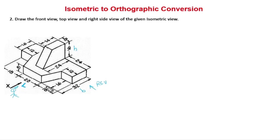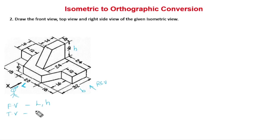In the front view we can see length and height. For the top view, we are looking from the top — lines that are parallel and height-related lines are vertical lines. In the top view, vertical lines become a point.